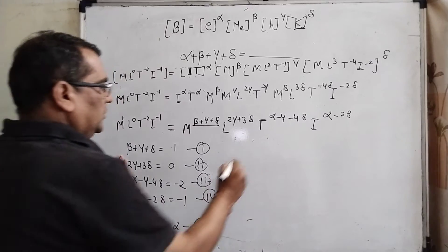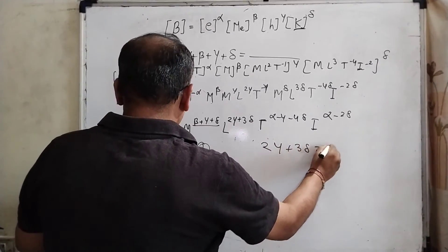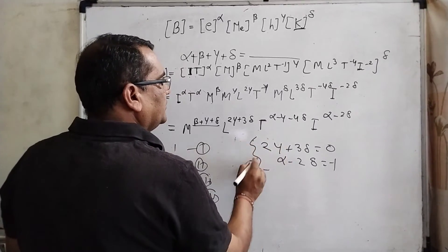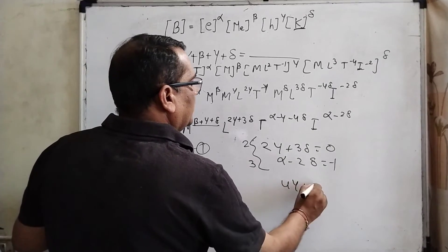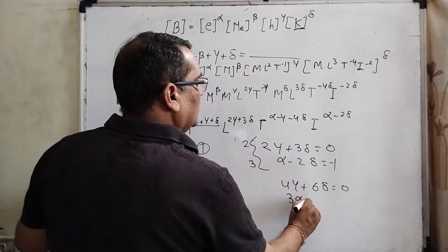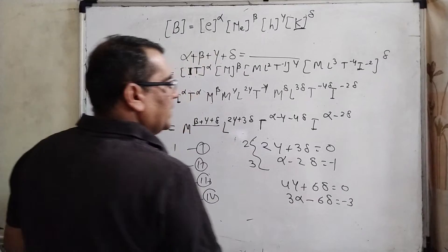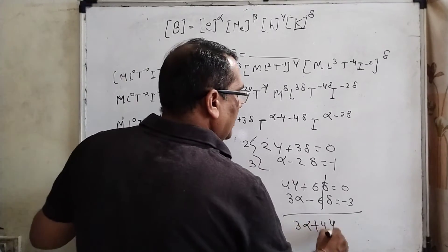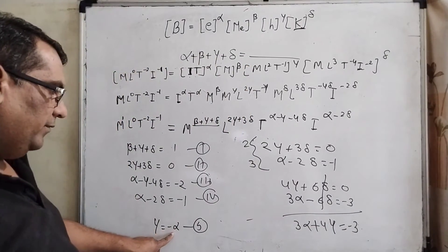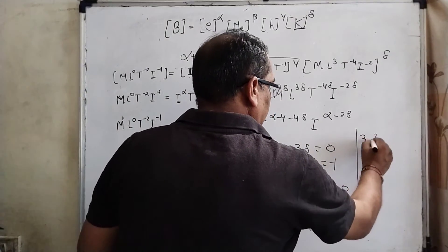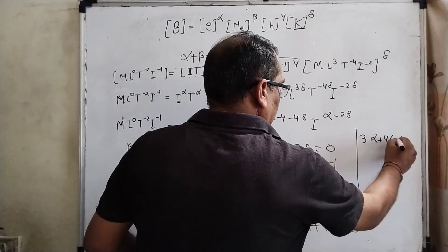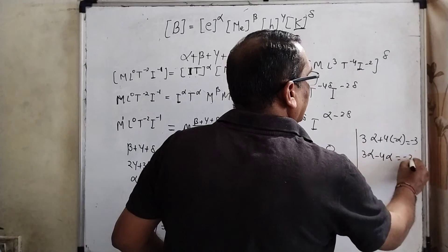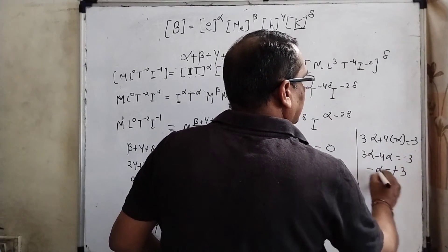Now solving equations 2 and 4. From equation 2: 2γ + 3δ = 0. From equation 4: α − 2δ = −1. Multiply equation 2 by 3 and equation 4 by 2: 6γ + 9δ = 0 and 2α − 4δ = −2, then 3α − 6δ = −3. Substituting γ = −α into the combined equations, we get −4α = −3... then further solving gives −α = −3, so α = 3.